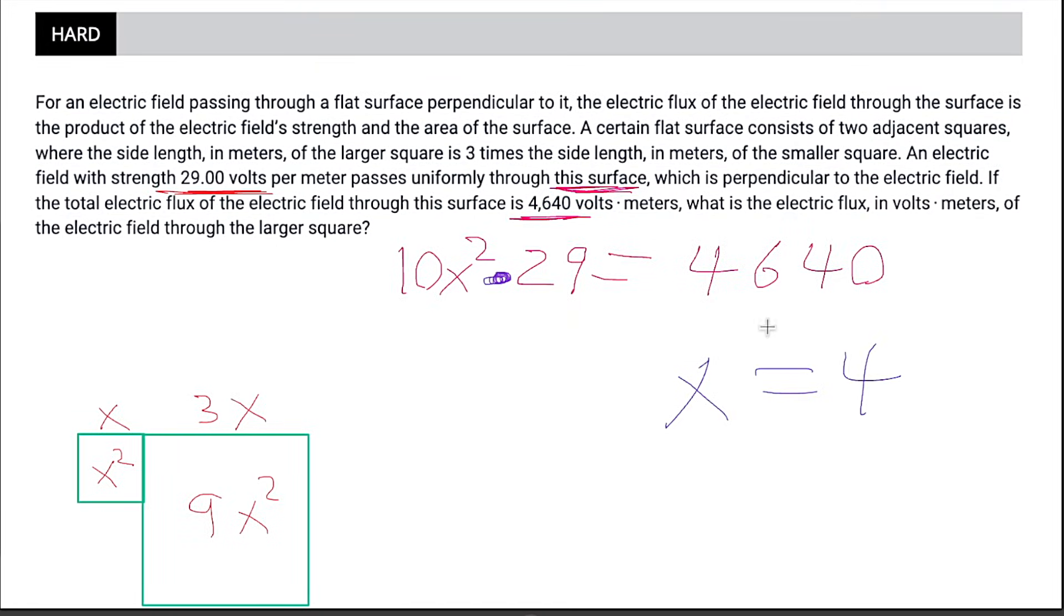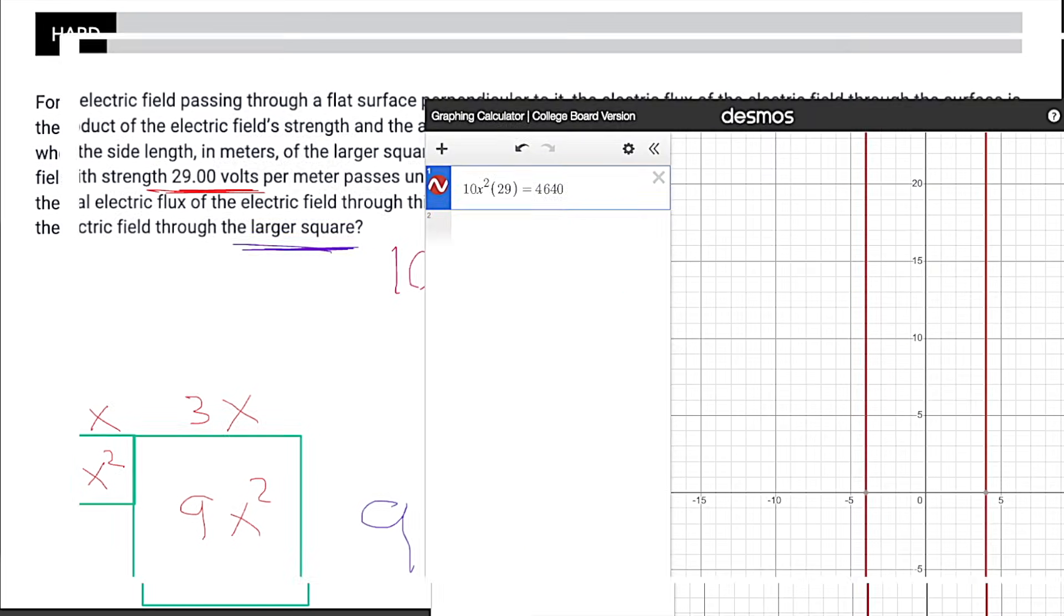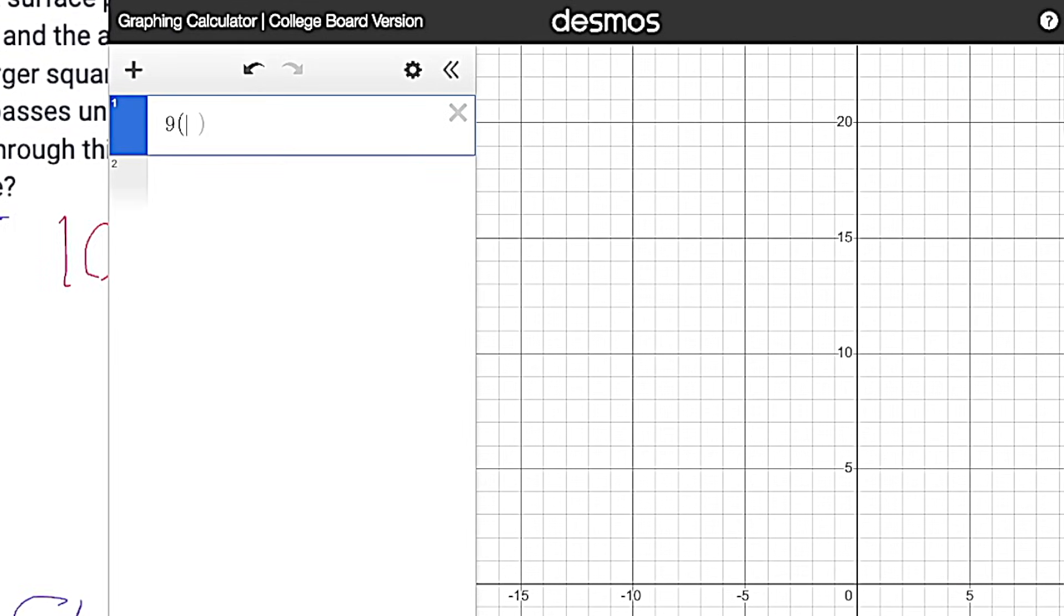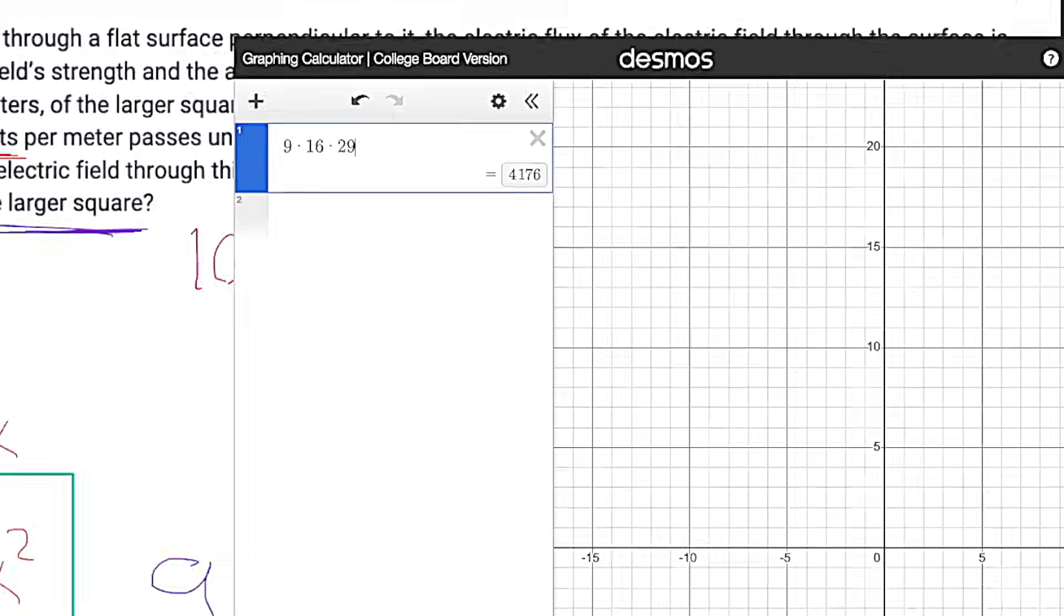It's saying, what is the electric flux of the field through the larger square? So if x equals 4, now we just need to do our little equation again. But this time we want to use 9x squared. So 9x squared. Remember, x is 4. So 4 squared is 16. 9 times 16 times our strength, 29. And that should be our answer. Let's again go to Desmos. 9 times 16 times 29 equals 4176. And that, my friends, is our answer.